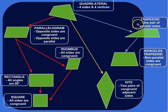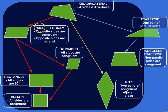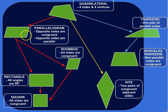Everything below the supergroup quadrilateral will have those characteristics — everything below will be a quadrilateral. And then I've got kind of three families of quadrilaterals here. The first group are parallelograms. Parallelograms have opposite sides that are congruent — this side and this side have the same length, and this side and this side have the same length — and opposite sides are parallel.